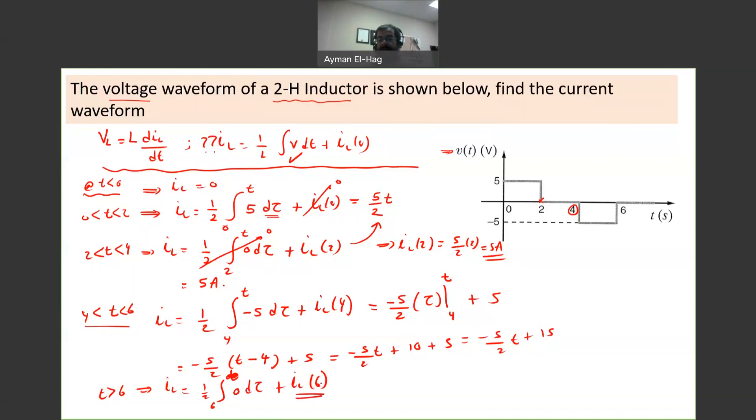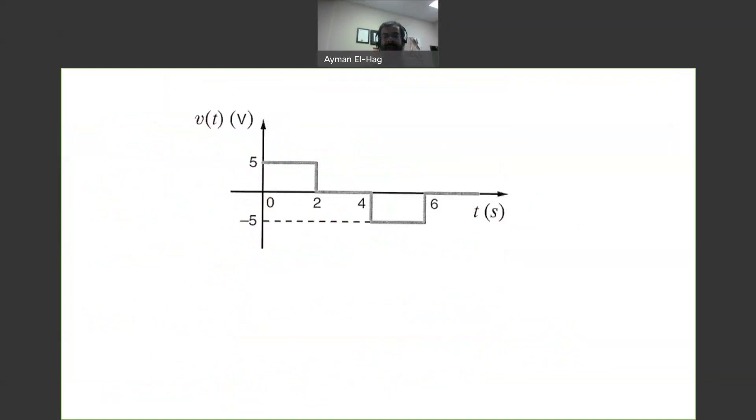IL at 6, you apply it here. Why? Because this is the current identified from 4 to 6. This equals 0. So this equals minus 5 over 2 times 6 plus 15, which equals 0. This would be 3 minus 15 plus 15 equal to 0. Let's see how we can draw this now.